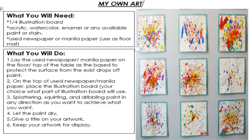My Own Art activity. What you will need: one quarter illustration board, acrylic, watercolor, enamel or any available paint or stain, and used newspaper or manila paper as a floor mat. What you will do: lay the used newspaper or manila paper on the floor or top of the table as a base to protect the surface from excess drops of paint. On top of the newspaper or manila paper, place the illustration board — your choice of which part to use. Then splattering, squirting, and dribbling paint in any direction as you want to achieve your desired result. Let the paint dry.